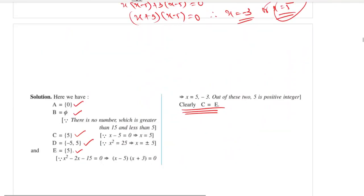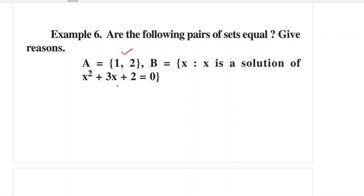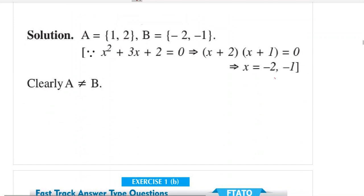Are the following pairs of sets equal? Set A = {1, 2} and the set x such that x is a solution of x² + 3x + 2 = 0. Solving the quadratic gives x = −1 and x = −2. Since {1, 2} ≠ {−1, −2}, these sets are not equal.